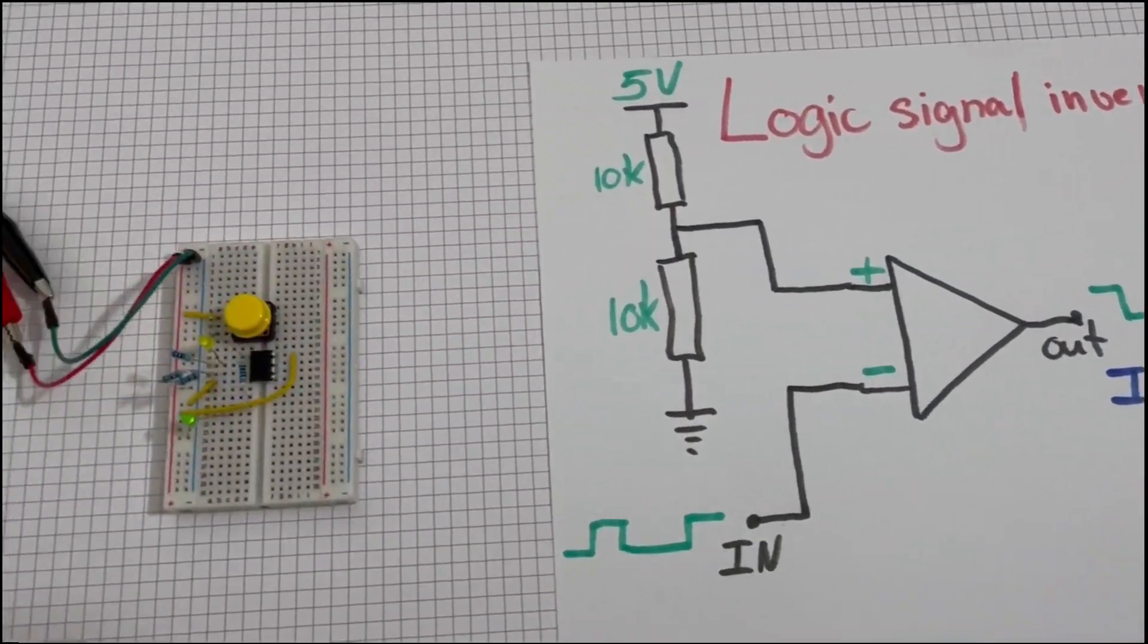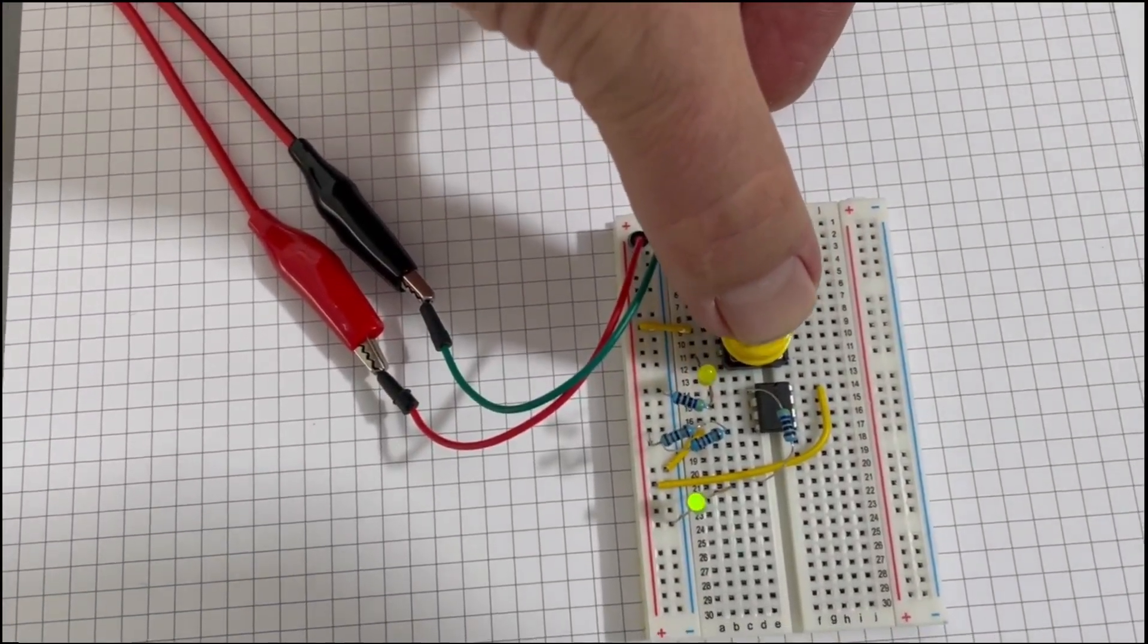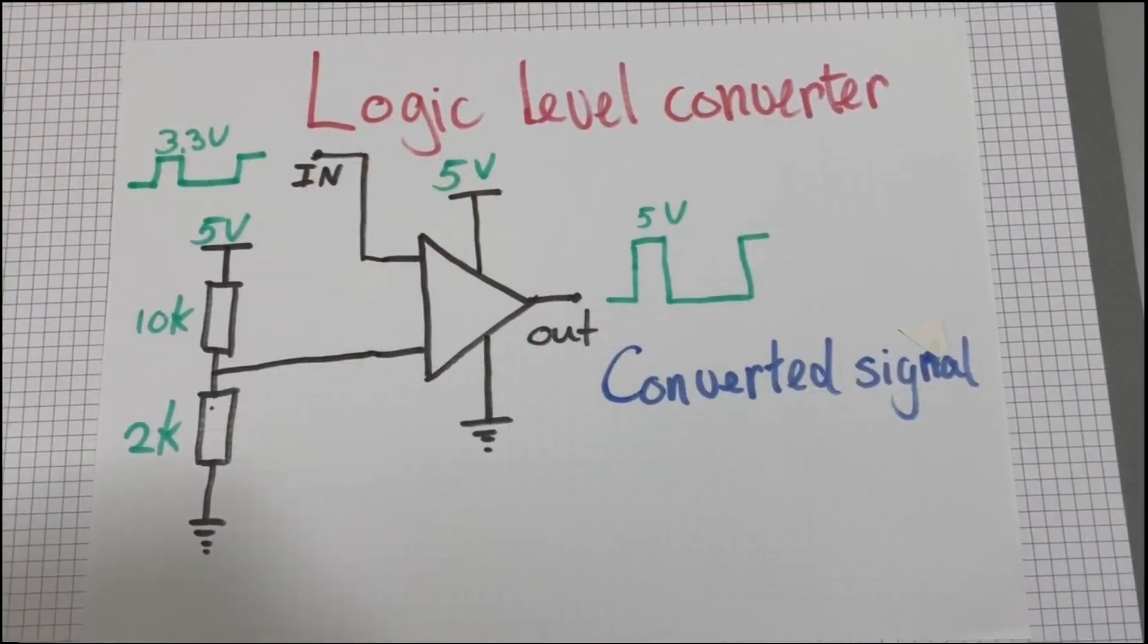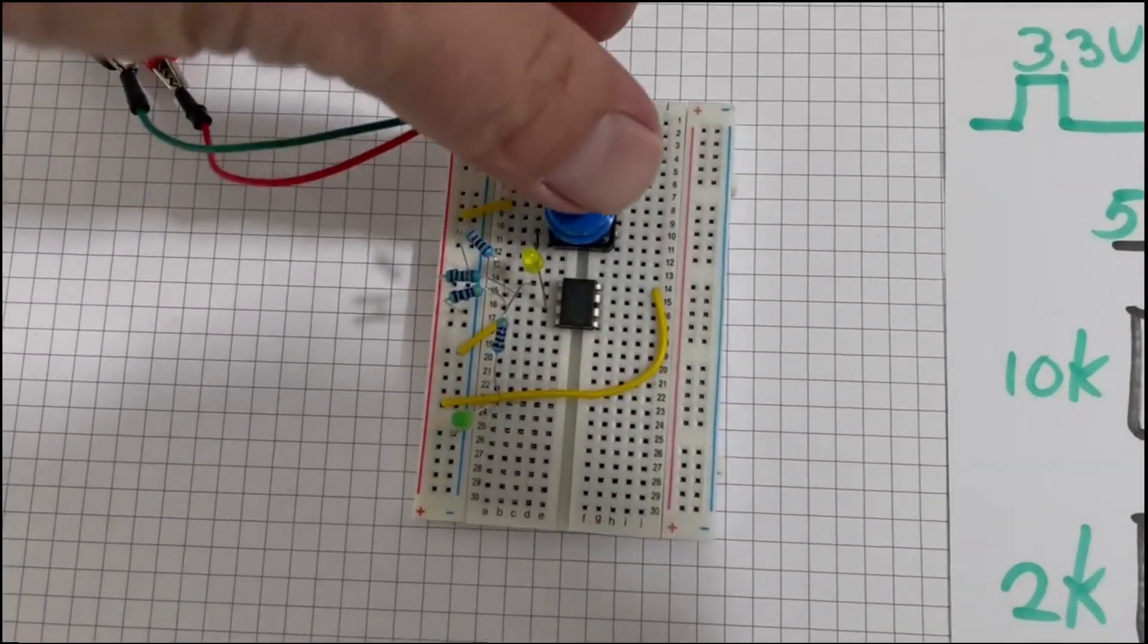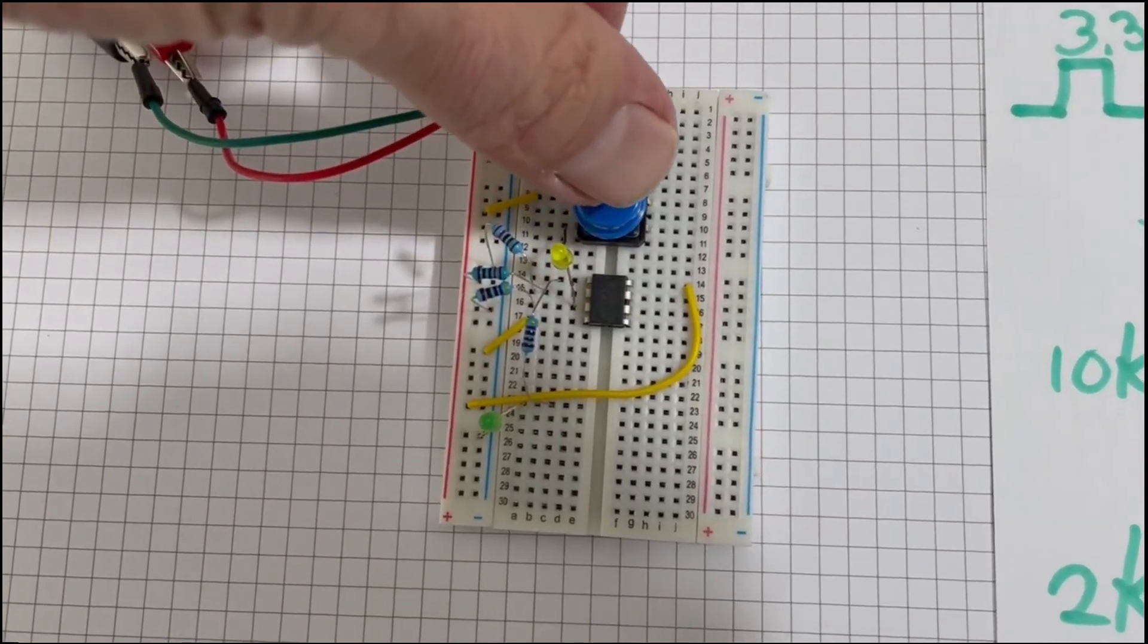Logic signal inverter. Turn a digital zero into a one and vice versa. Logic level converter. Make a digital 5-volt signal into a 3.3-volt signal, or the other way around.